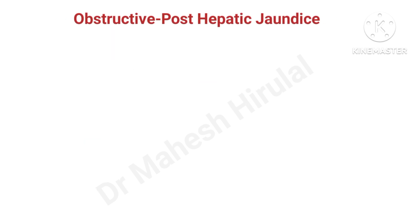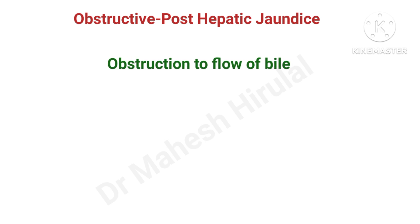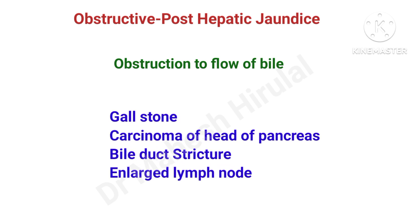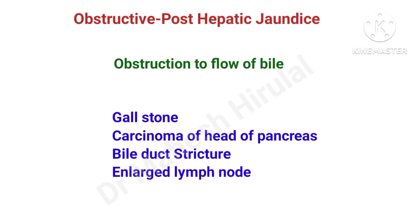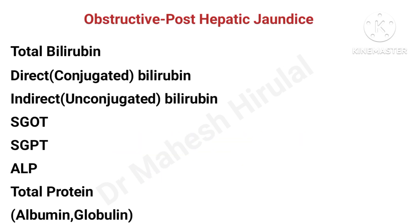Obstructive jaundice, also called posthepatic jaundice, is due to obstruction to the flow of bile. Gallstones, carcinoma of the head of pancreas, strictures of the bile duct, and enlarged lymph nodes may lead to obstruction of bile flow and obstructive jaundice. In obstructive jaundice, there will be a rise in total bilirubin, especially a greater rise in direct bilirubin compared to indirect bilirubin.